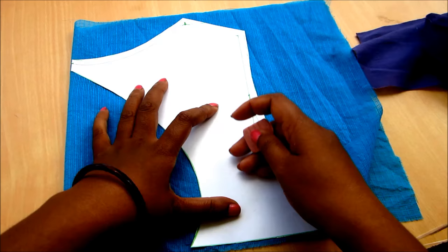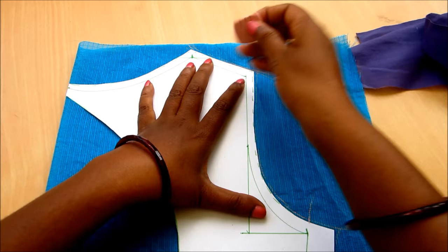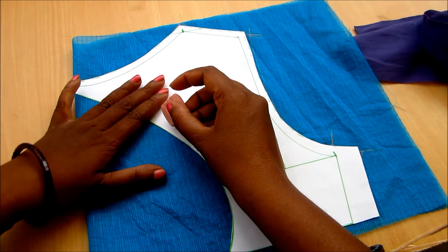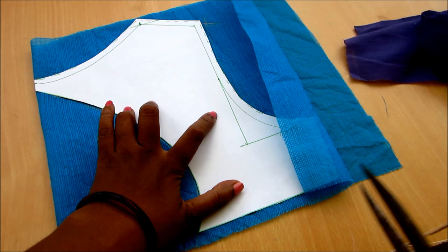For the front panel you can go with the same boat neckline, keeping the down of one inch, that is three inches neck deep, and the shoulder line of two and a half inches.